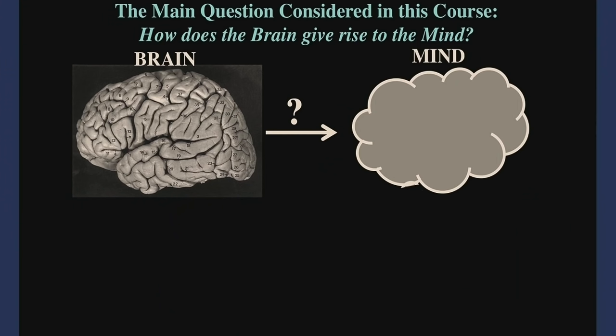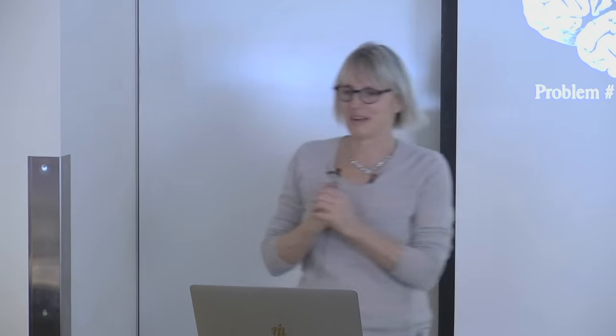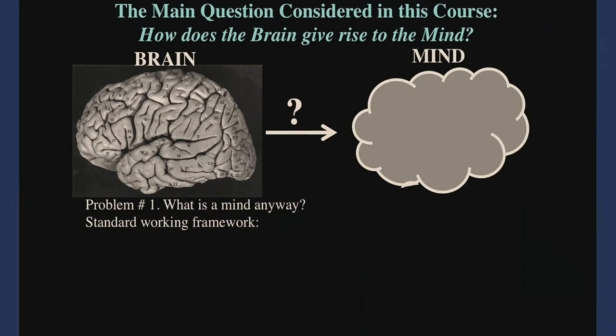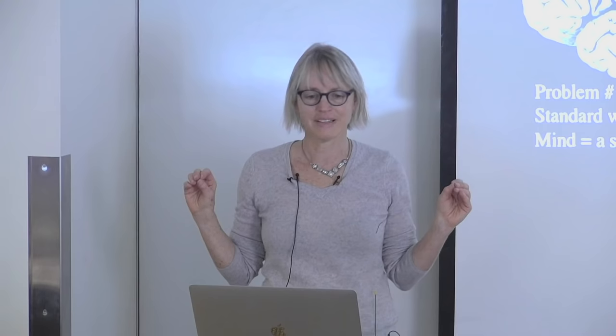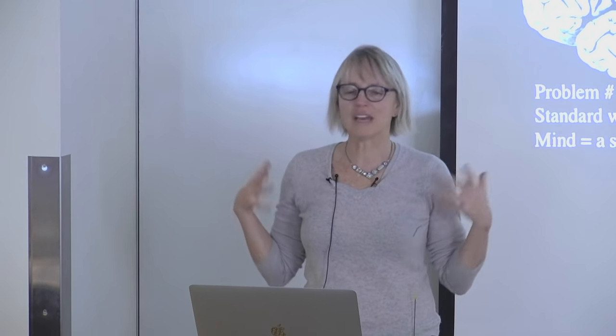The first problem you encounter is: what is a mind anyway? It feels like one of those things where you wonder if we can even have a science of the mind. Our field of cognitive science has come up with a framework — not even a theory, but a framework for thinking about what a mind is. The framework is the idea that the mind is a set of computations that extract representations.